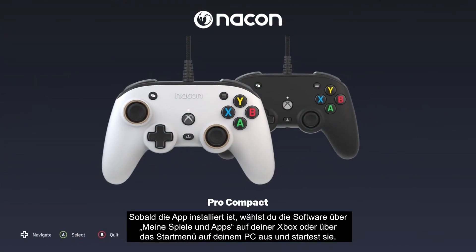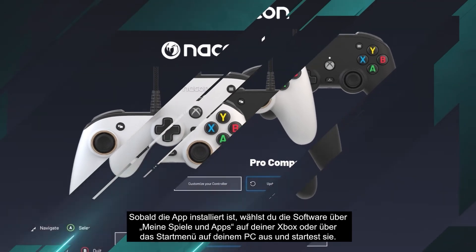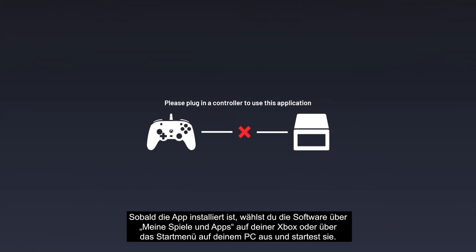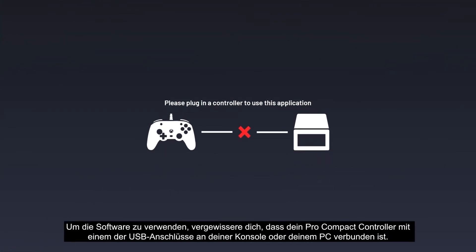Once the app is installed, select and launch the software from My Games and Apps on your Xbox, or via the start menu on your PC. To use the software, make sure your Pro Compact controller is connected to one of the USB ports on your console or PC.